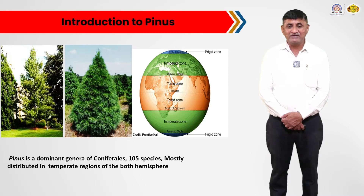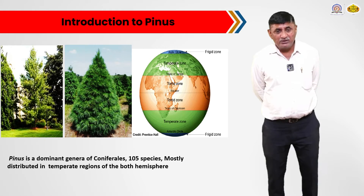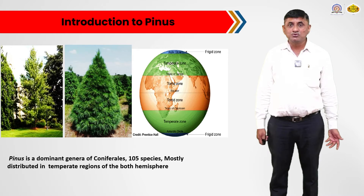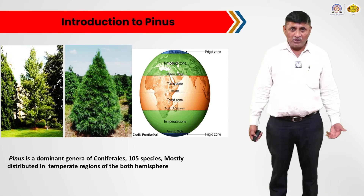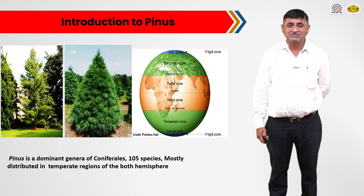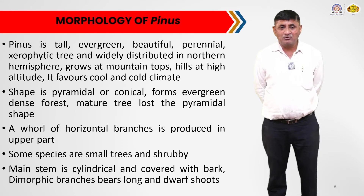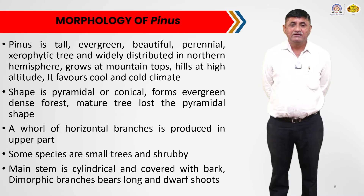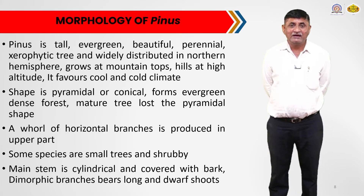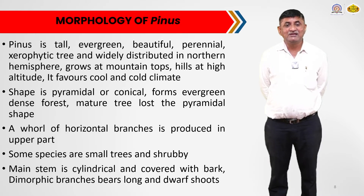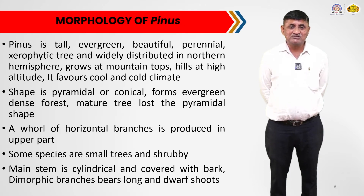It is more distributed towards the northern hemisphere. You can see the map shown there, displaying the different zones of the earth, and towards the temperate zone the Pinus shows greater distribution. Because of its evergreen nature and pyramidal shape, Pinus has a place among ornamental plants and can be used for beautification of gardens, formal gardening, or row plantation. Morphologically, Pinus is a tall, evergreen, beautiful perennial tree with xerophytic characteristics, widely distributed in the northern hemisphere.